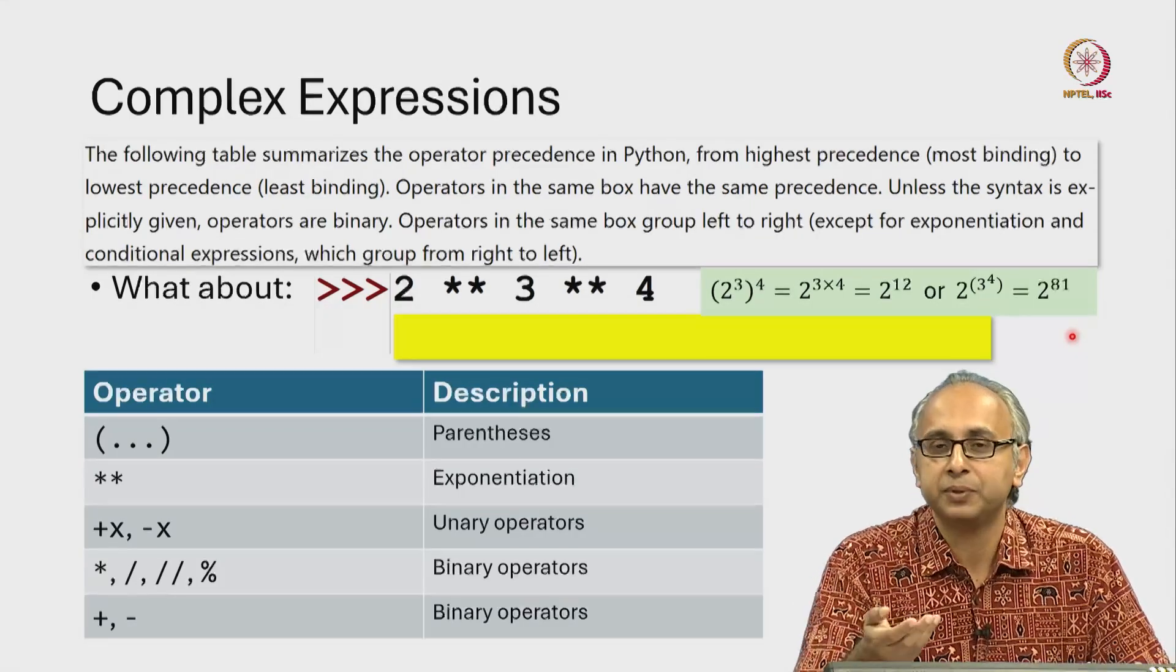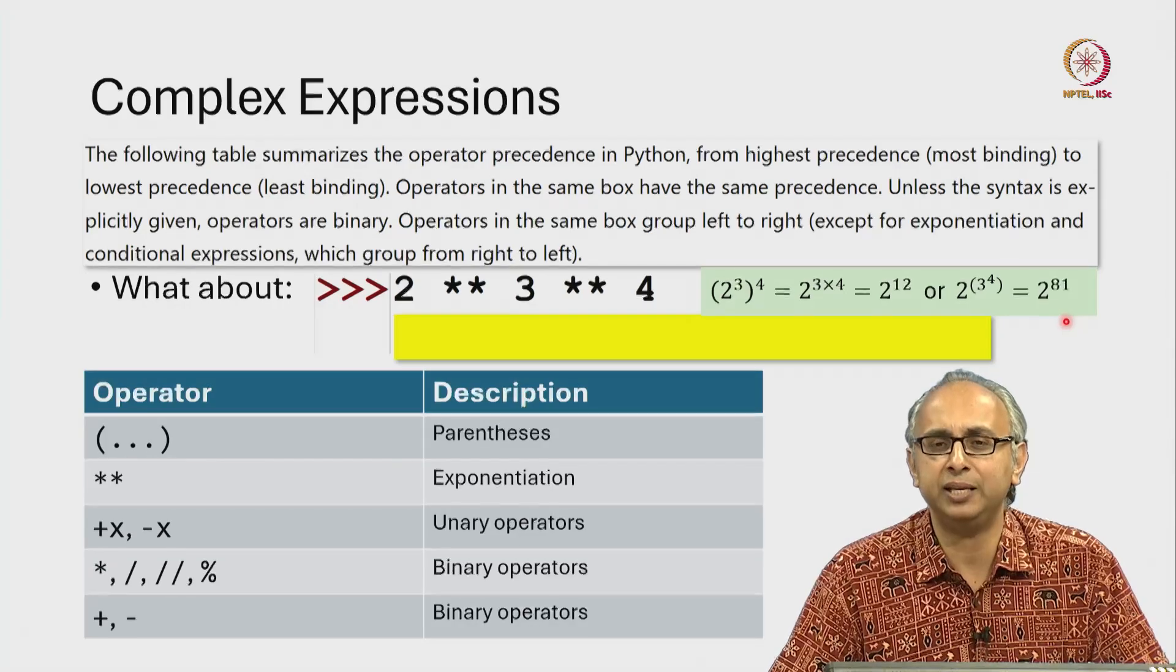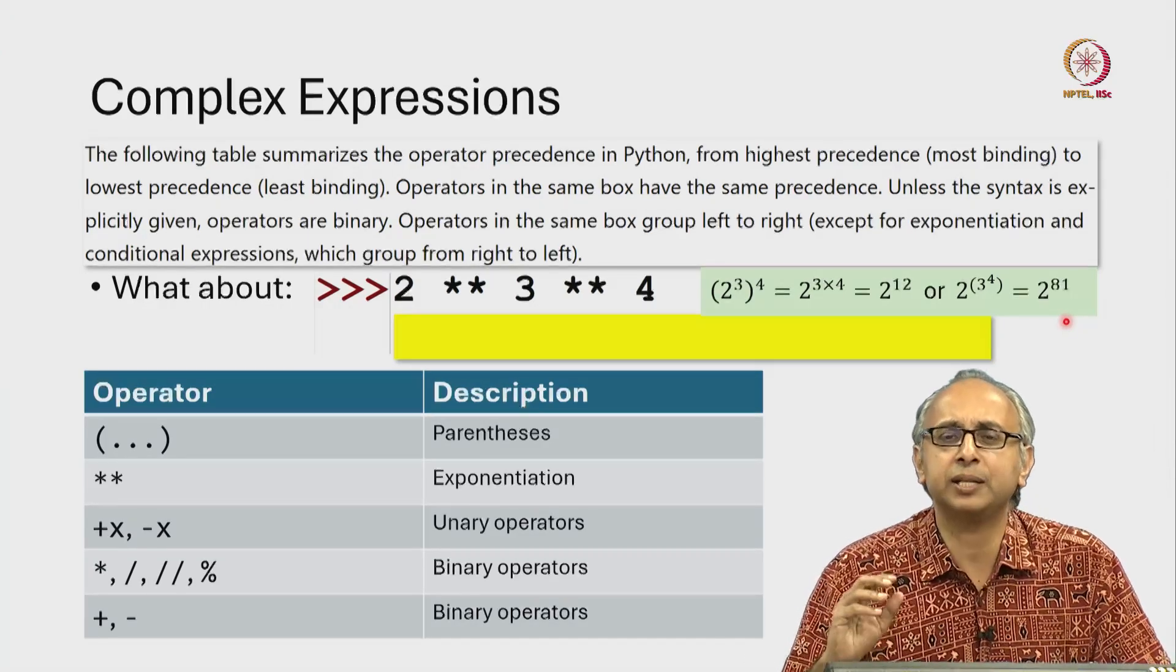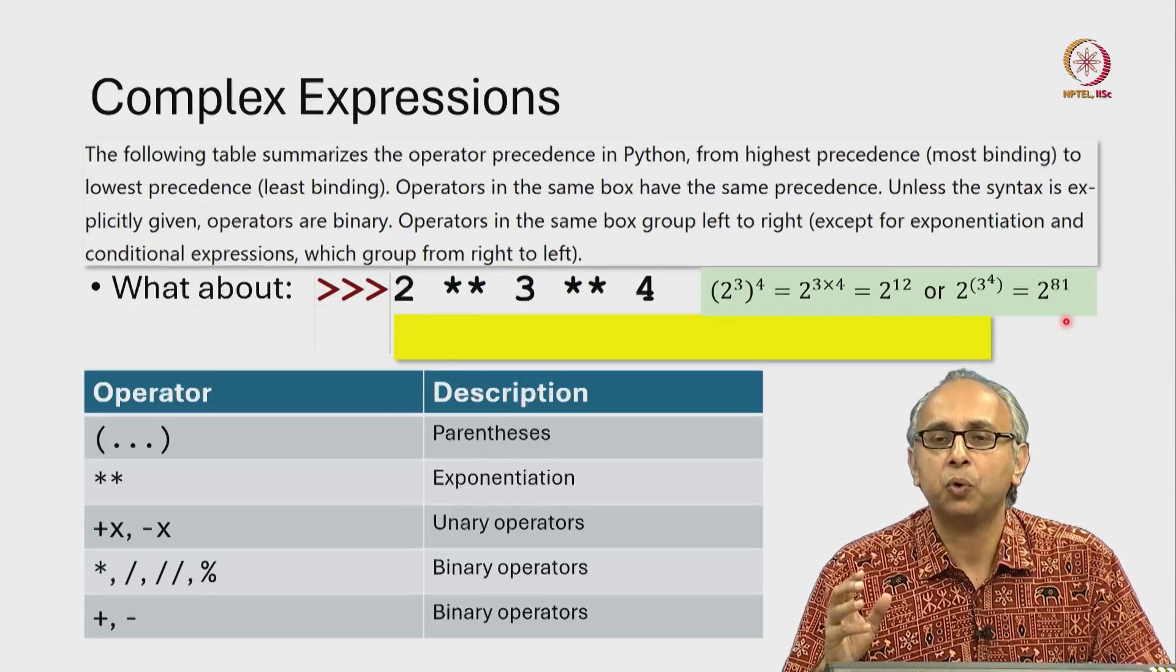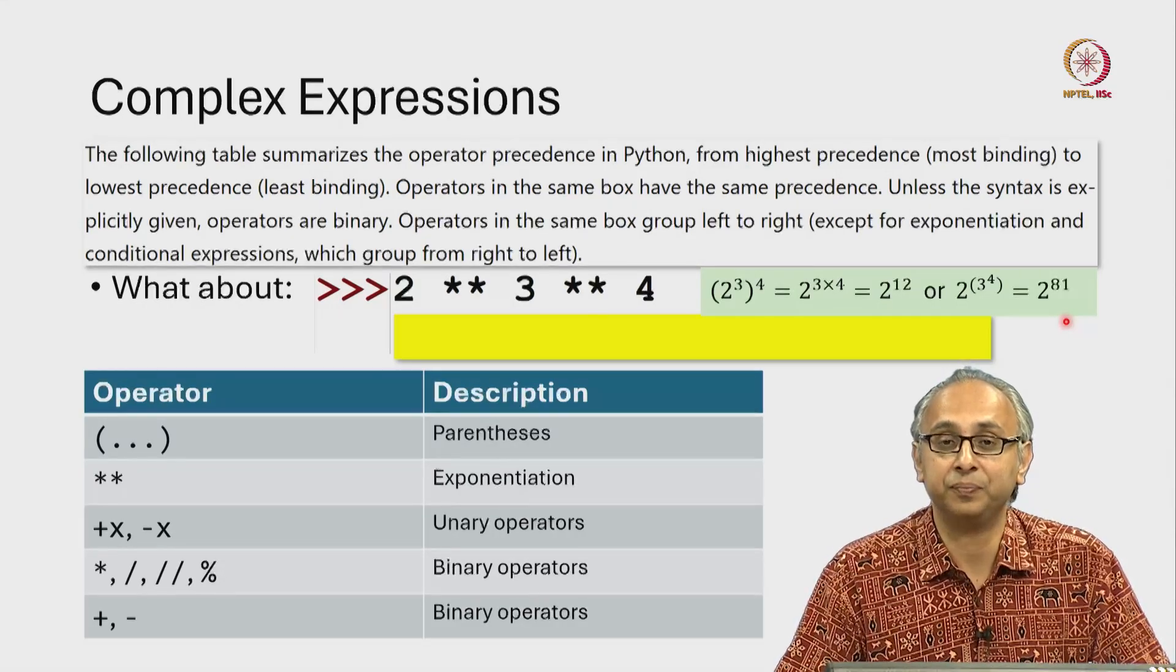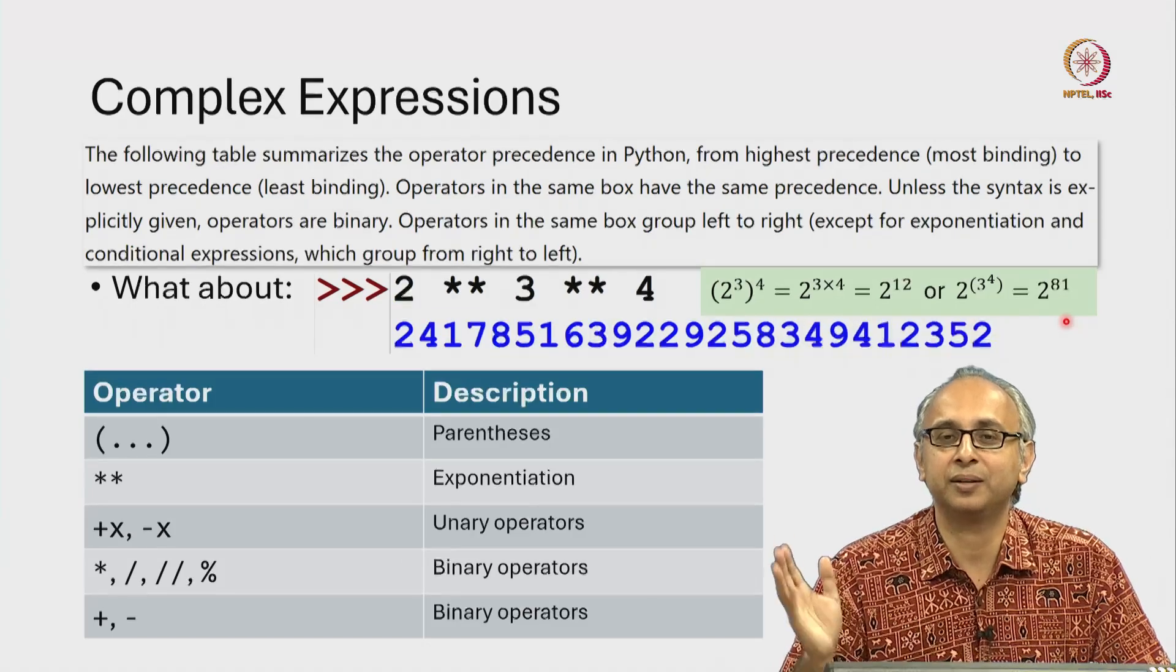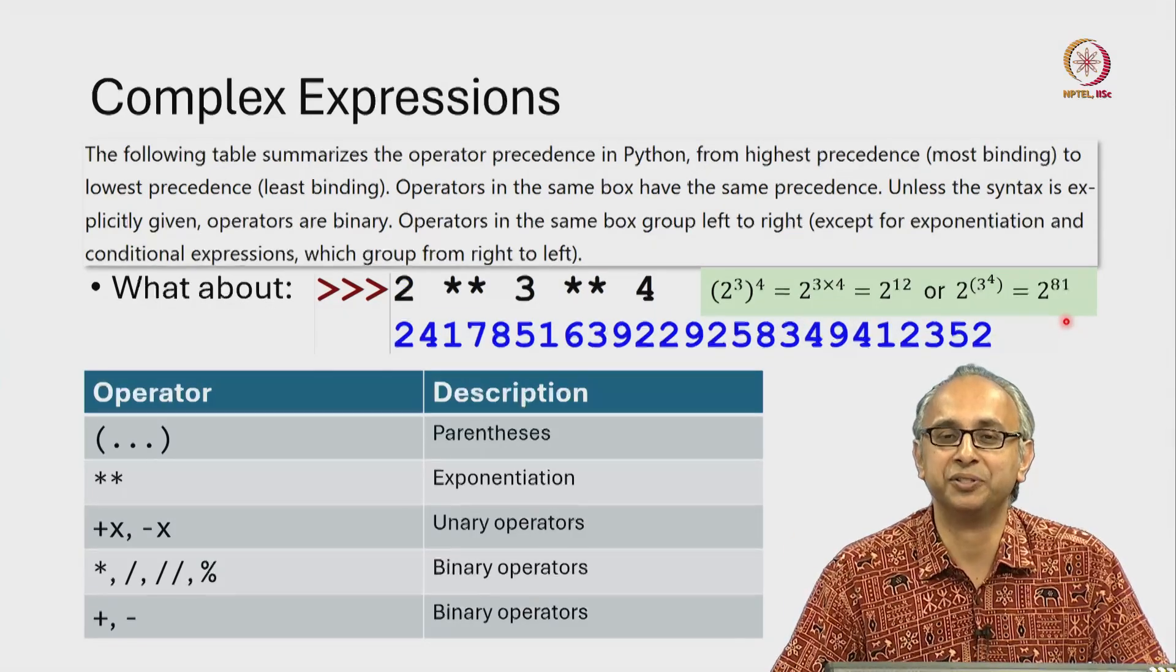If you actually tried on a standard handheld calculator to calculate 2 to the power 81, you either will get some sort of an error message or you will get an inexact answer. If we try it in Python however, we get a perfectly correct answer.